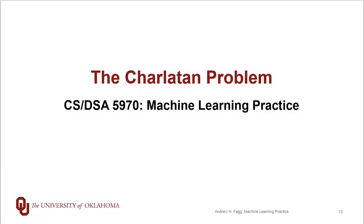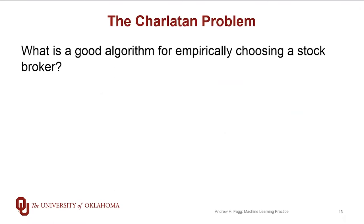Before we move on to solving the larger problem of comparing model types, I wanted to talk about a statistical issue. I'm going to frame this in the form of the charlatan problem. The idea here is, suppose I want to make a choice about whether or not to hire a stock broker, and the question is, what's a good algorithm for making this choice empirically?